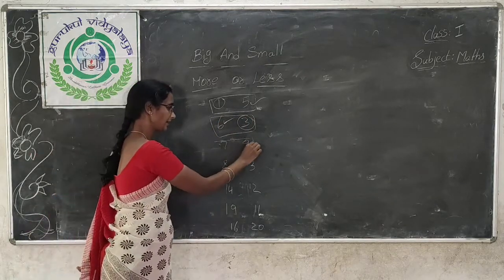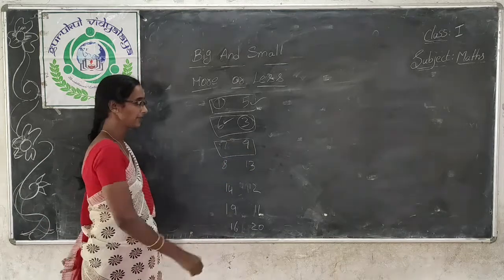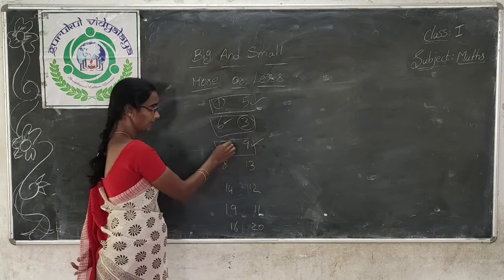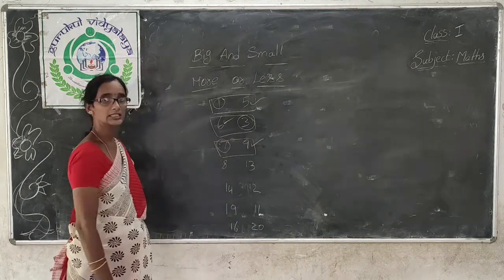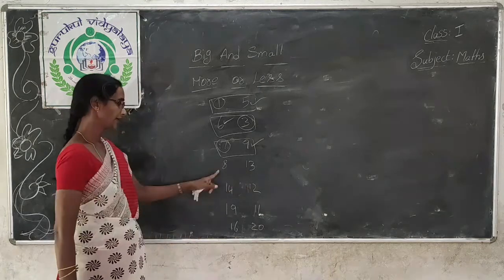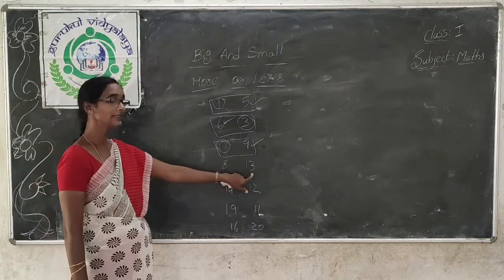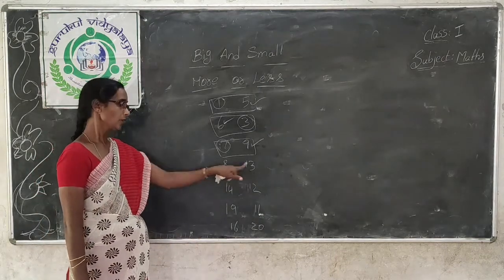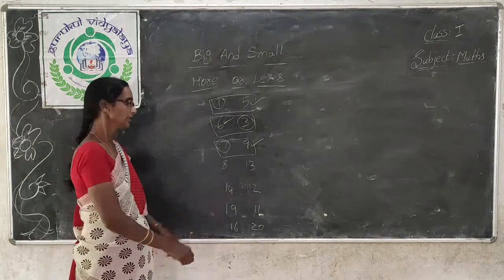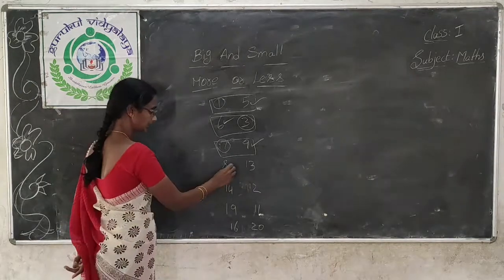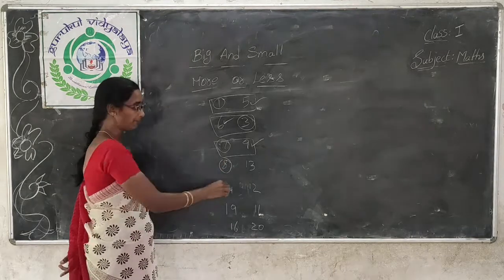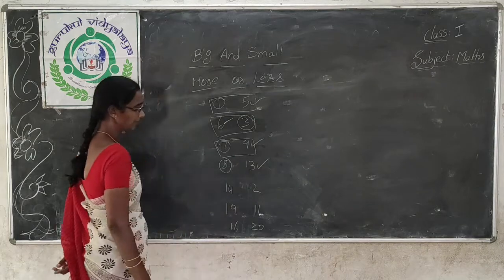And here, 7 and 9 are there. Which is the big number? 9 is the big number and 7 is the small number. Here, 8 and 13 are there. 8 is a 1-digit number and 13 is a 2-digit number. 1-digit numbers are always smaller than 2-digit numbers. So 8 is the small number and 13 is the big number.